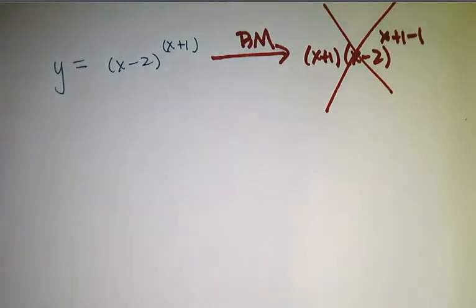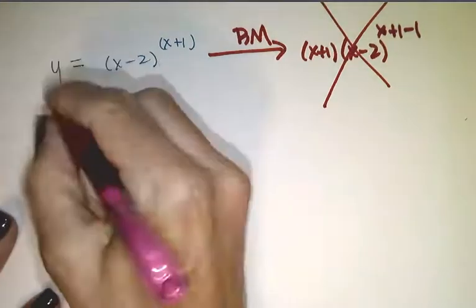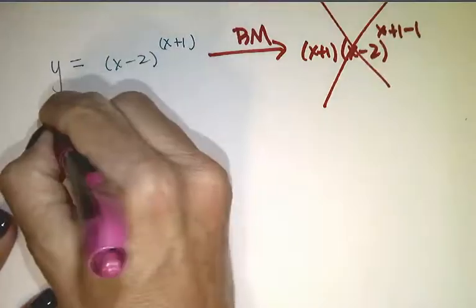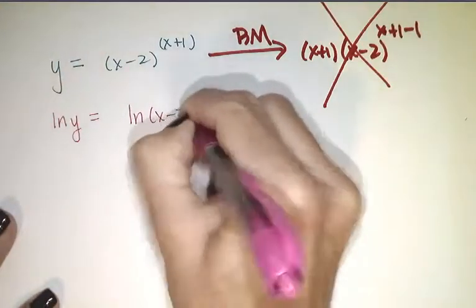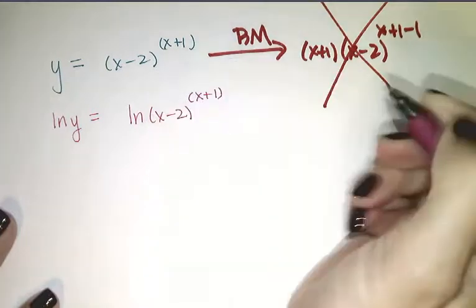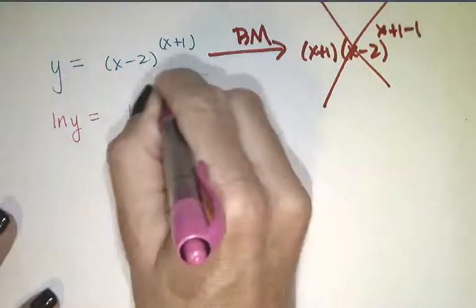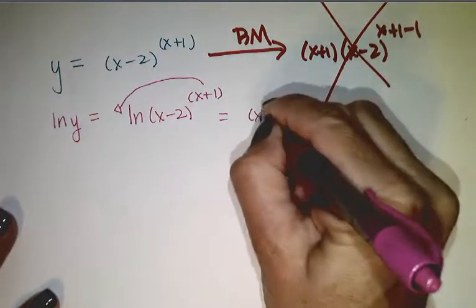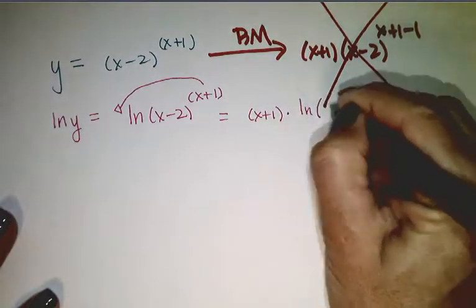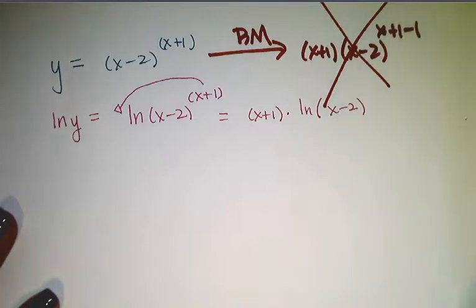Let's now do exactly what we just did in the last problem and take the natural log of both sides. The natural log of y equals the natural log of (x-2) to the (x+1). The reason we did that is so we can bring that exponent down. So this equals (x+1) times the natural log of (x-2).